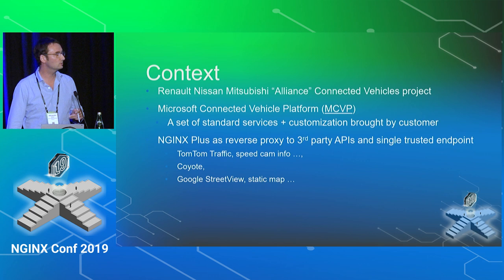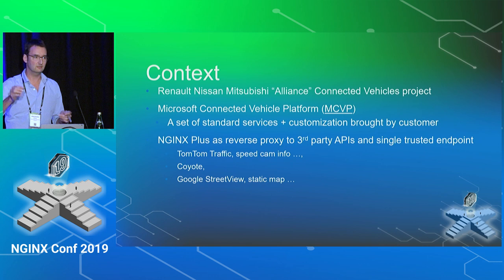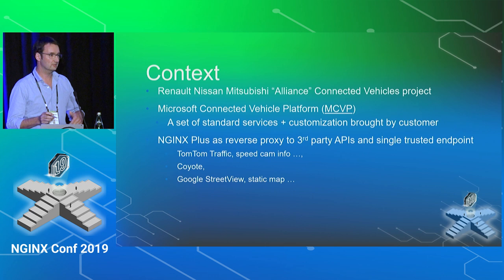So the Renault Clio you can buy today, the Nissan Leaf — if you search a destination and want to see the arrival street, you can press a button and get a picture from Google, or search for a pizzeria near your destination and it will show you an address. This is based on TomTom services.